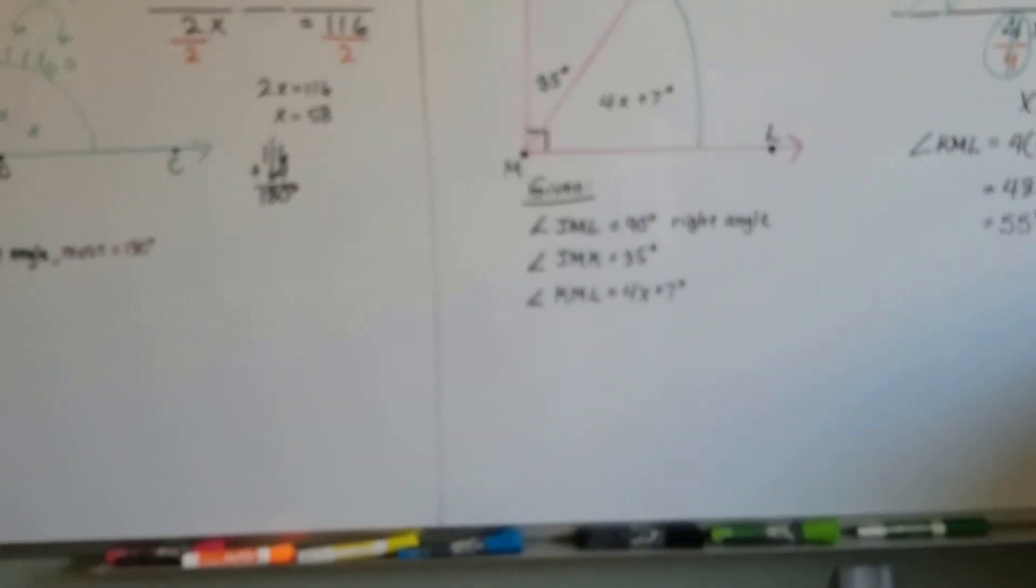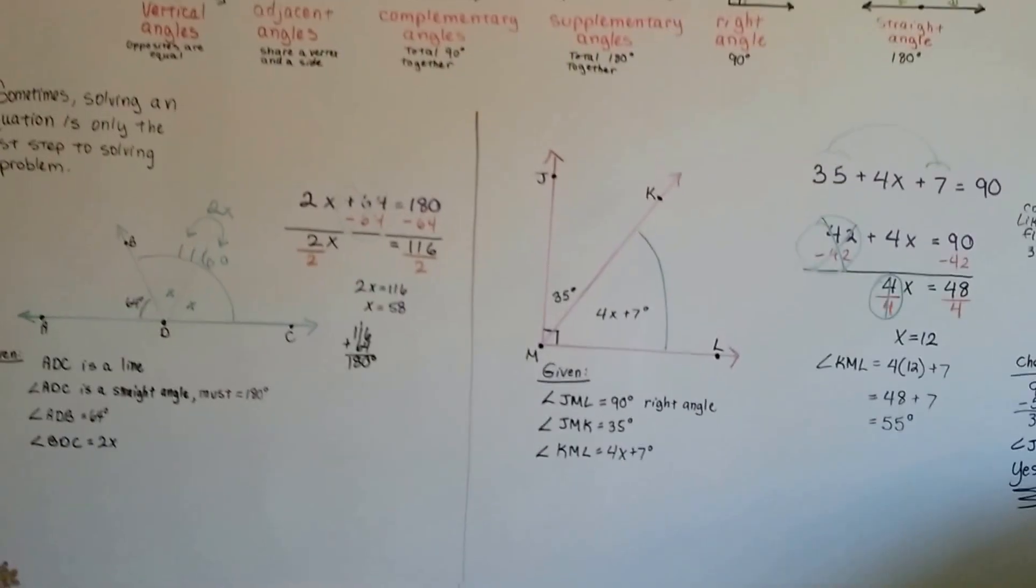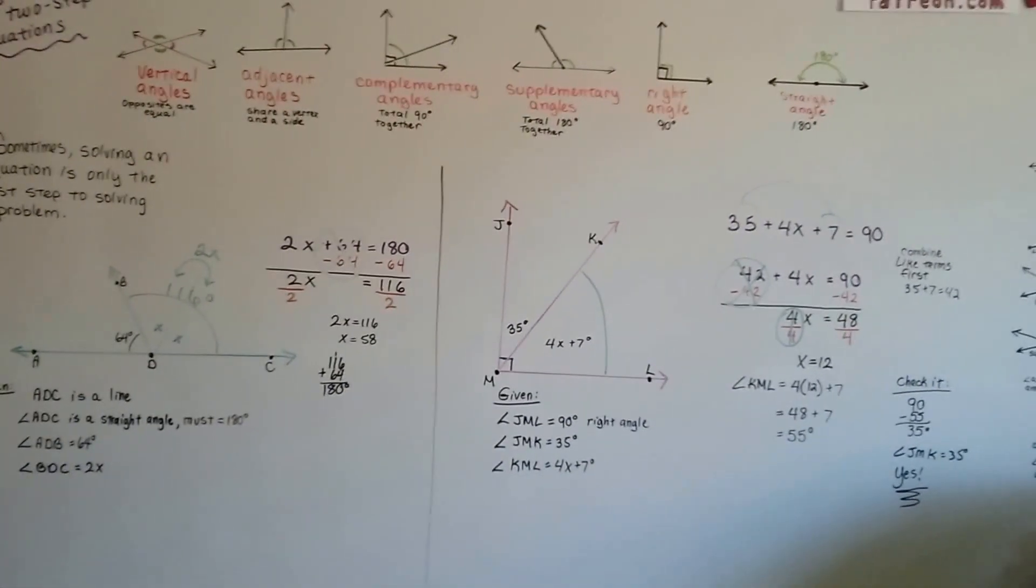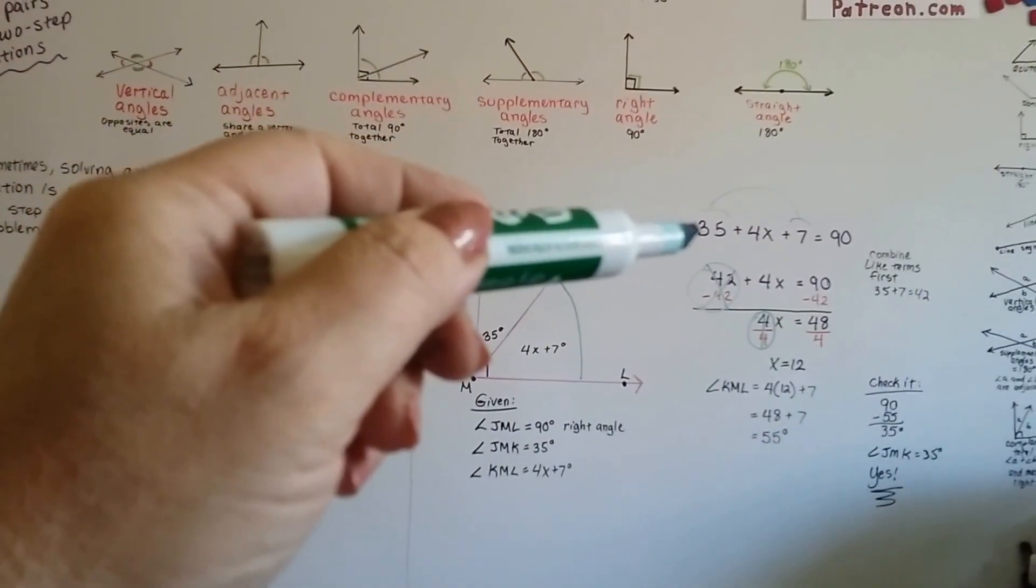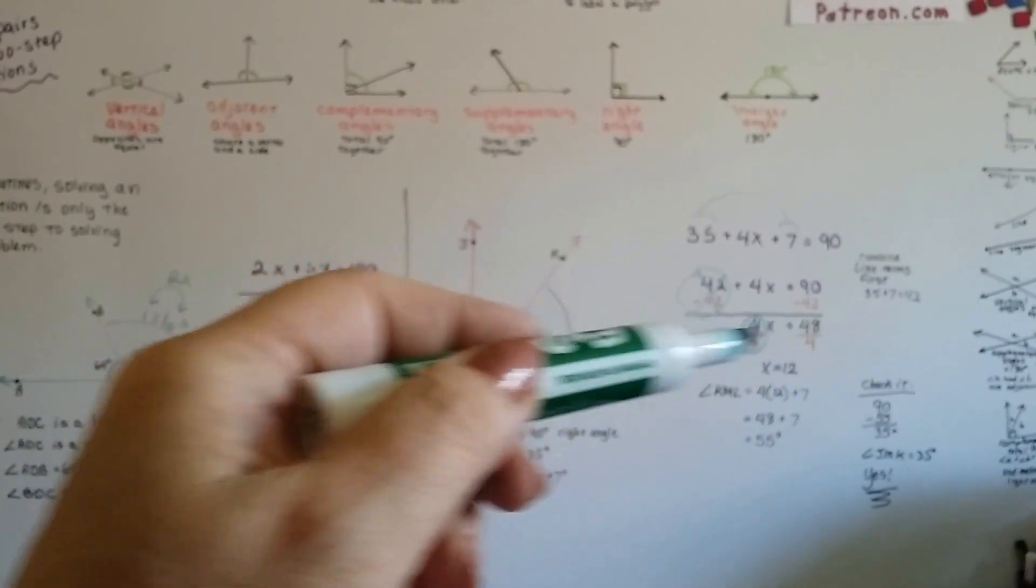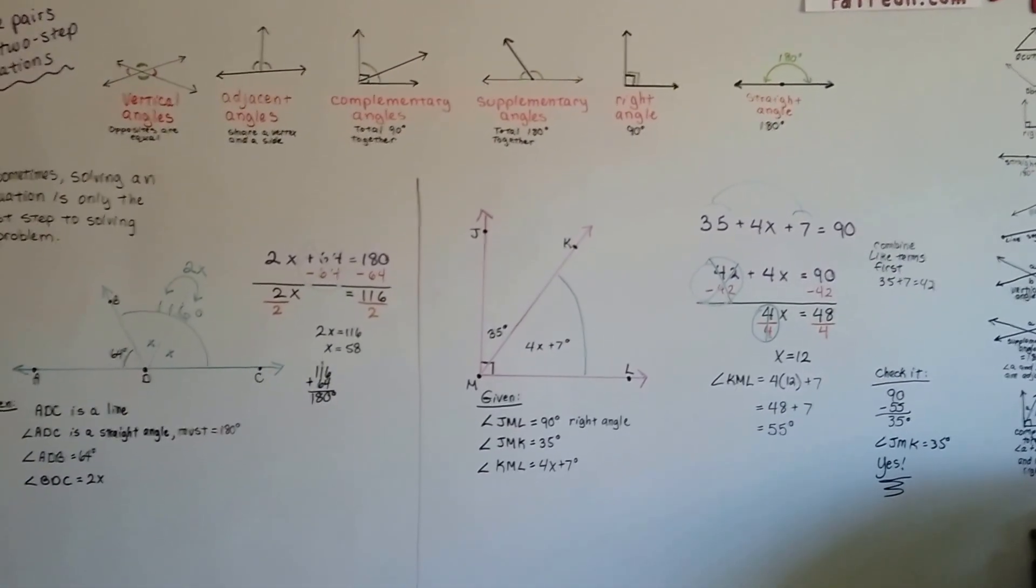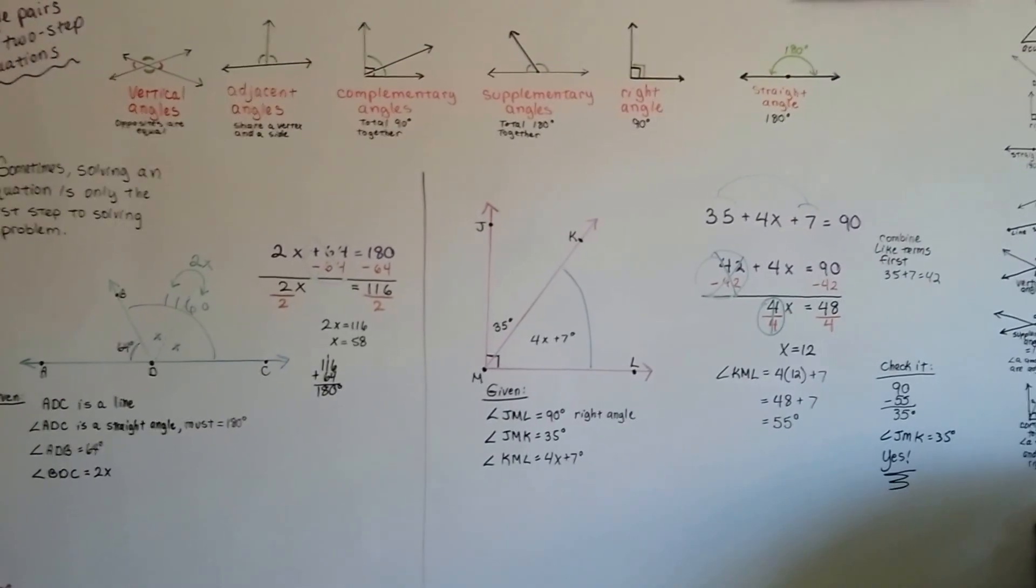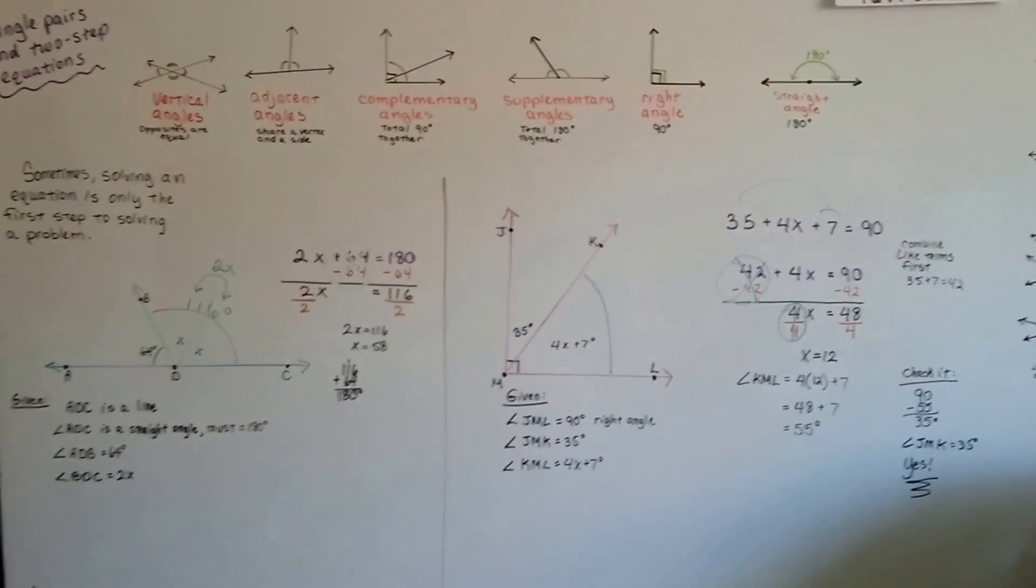They're just like the equations we were doing before when we did an inverse operation and we isolated the variable. We did subtraction to get rid of positive numbers and we did addition to get rid of negative numbers. We divided or multiplied to isolate the variable. And then we found out what it was and we plugged it in to check it and see if it was right. And we were all set. So I hope this was helpful.